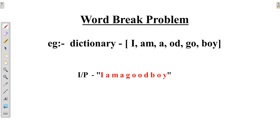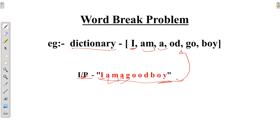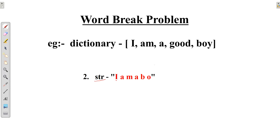Now back to our question: the word break problem. Here we'll be given an input string and a dictionary. We have to tell if this string can be split into multiple words such that each word belongs to the dictionary. For example, 'I am a good boy' — I, am, a, good, and boy are all in the dictionary, so it splits into five words and each word belongs to our dictionary. In another example, if the input string cannot be split into words belonging to the dictionary, it will return false.